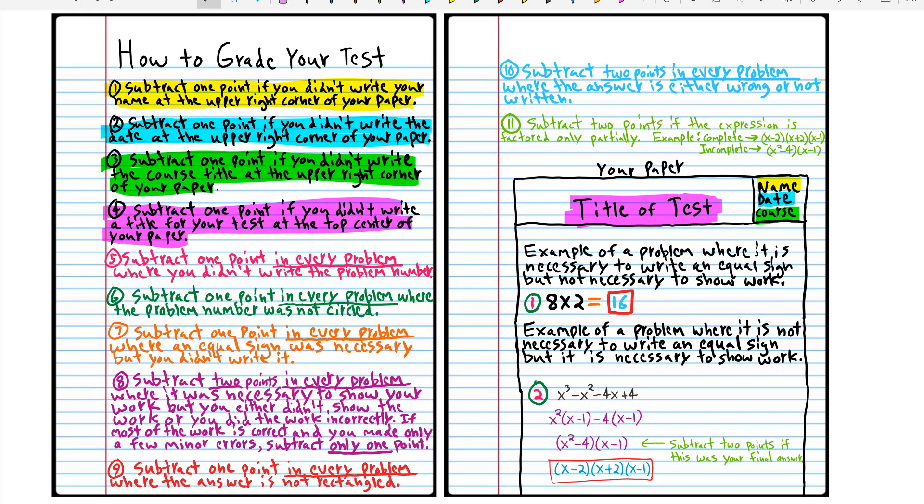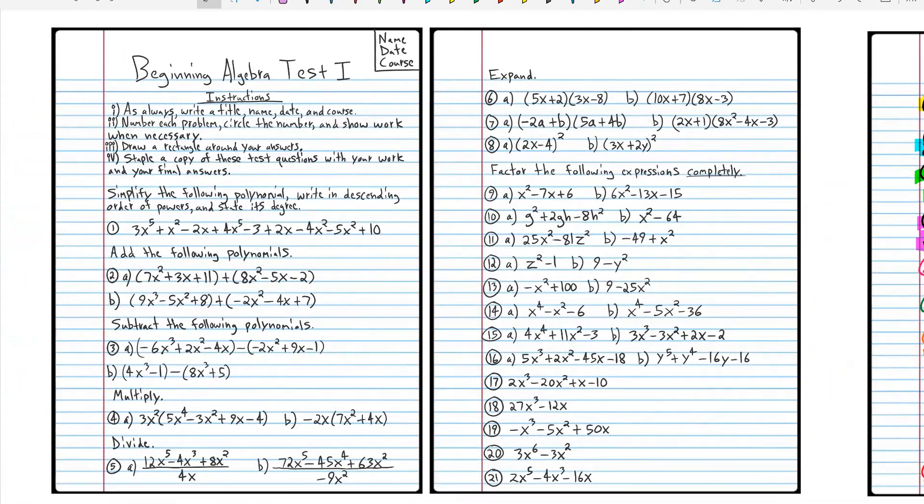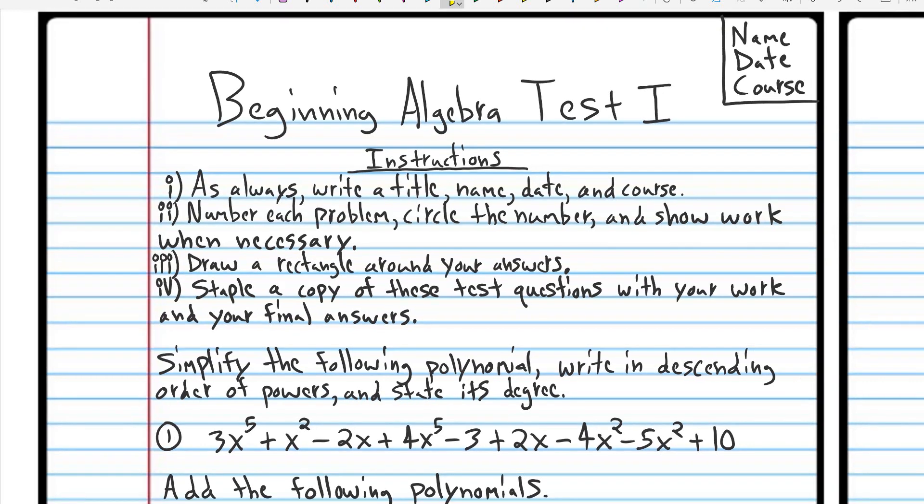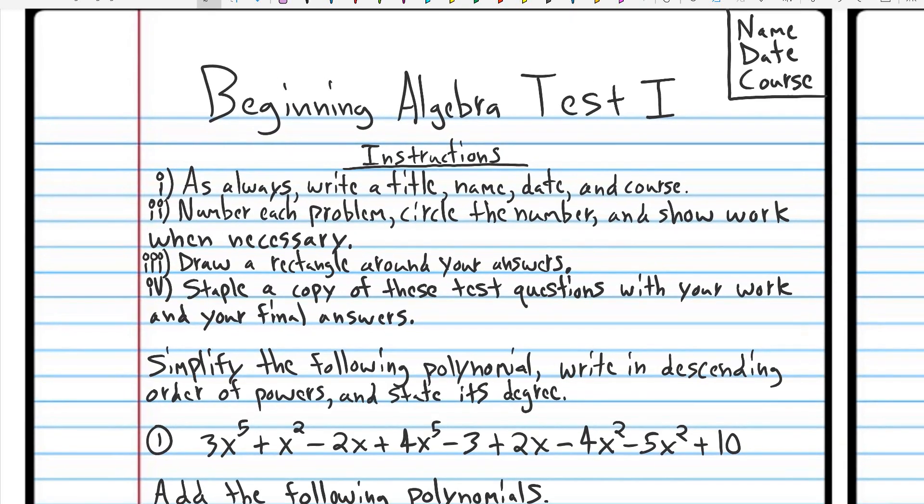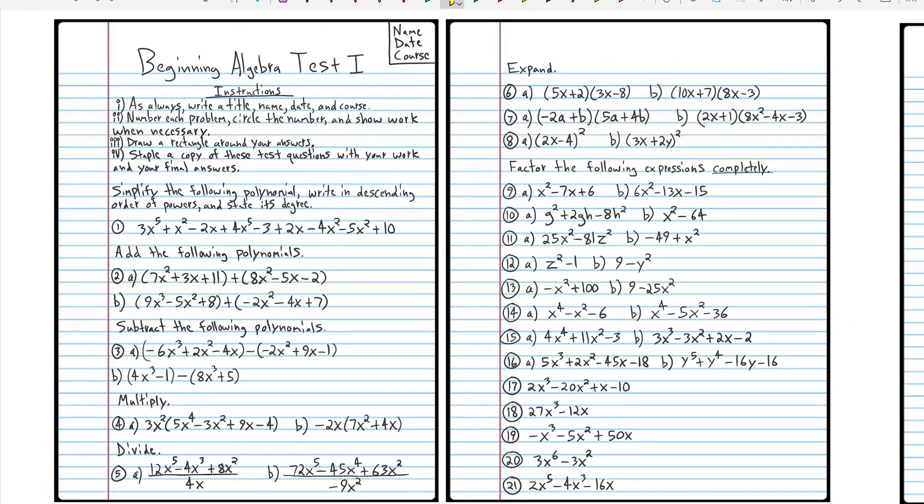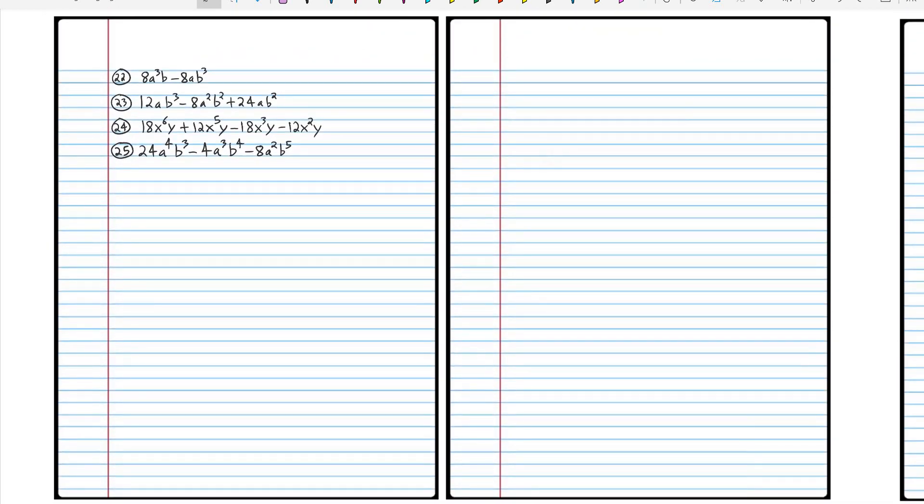So with that said, let's go ahead and look at the exam and you can take screenshots. Notice the instructions. I want you to staple a copy of these questions with your final answers. So you're going to use this test and have a separate piece of paper, write all your work on that separate piece of paper, and then staple this entire exam to that paper and keep it for the rest of your life. So here's the test. Get a screenshot of that. And also a screenshot of these last four problems.